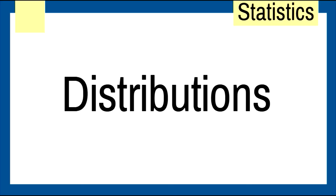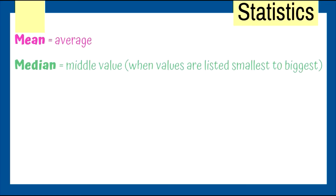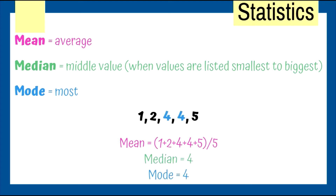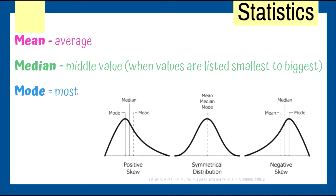Let's move on to distributions. Mean is average, median is middle value, and mode is most. For example, with 1, 2, 4, 4, 5 — mean is all values divided by 5; median is 4; mode is 4. When the mean pulls everything to the right, that's a positive skew; when it pulls to the left, that's a negative skew.